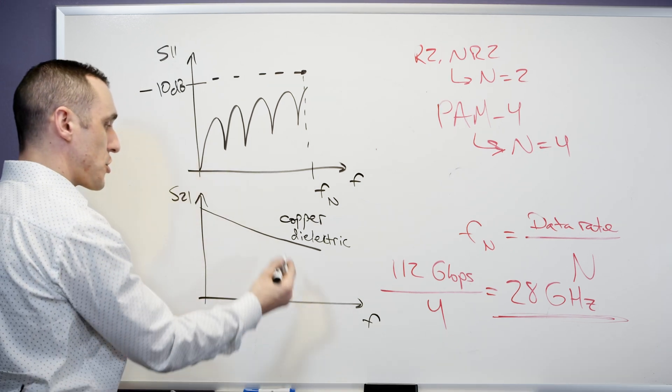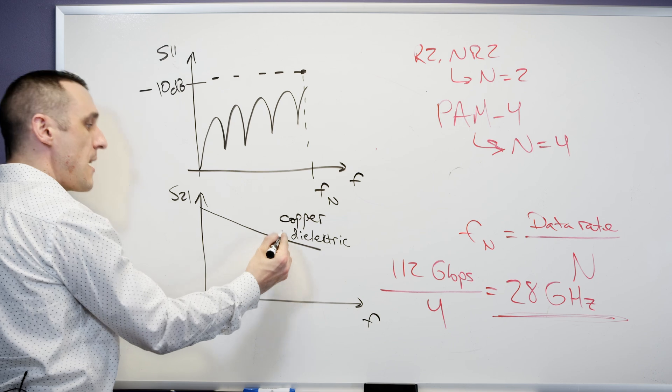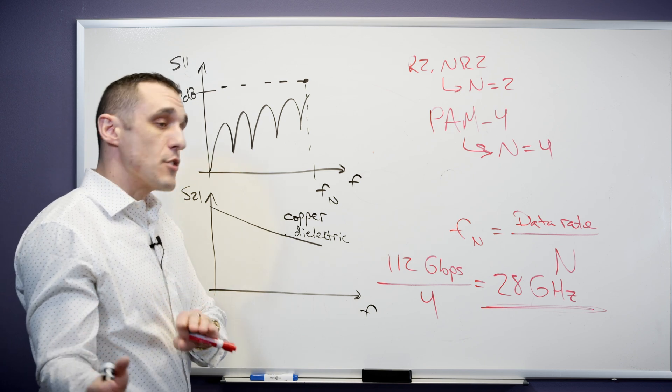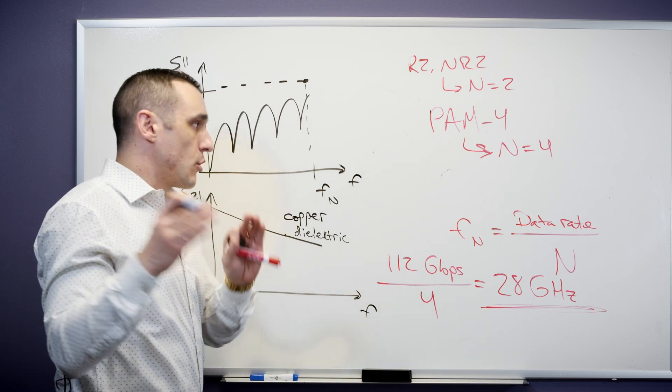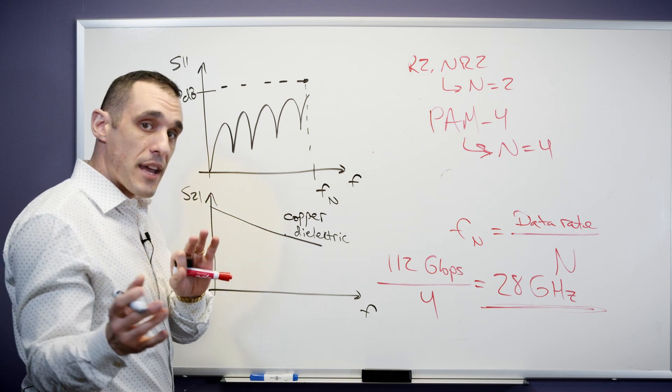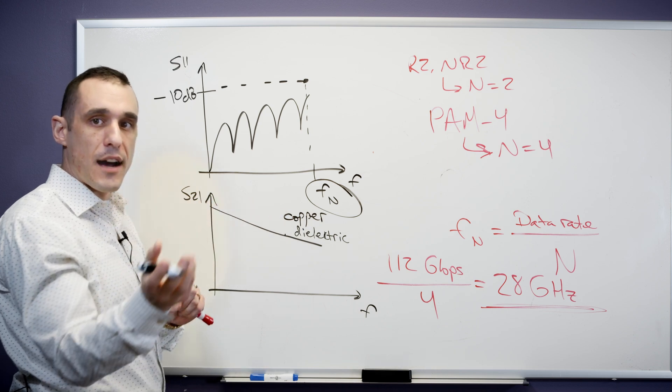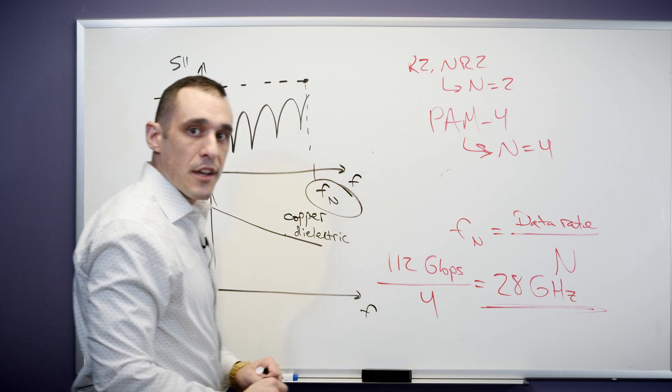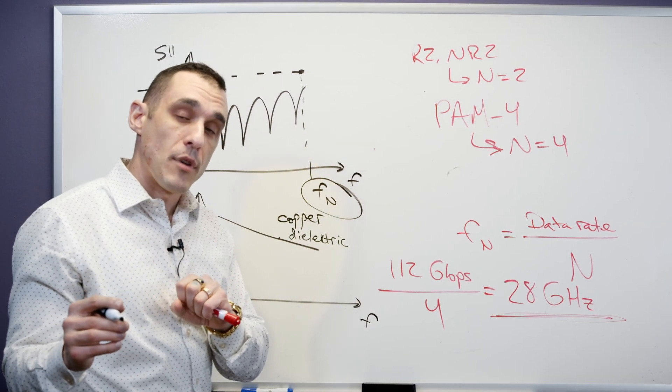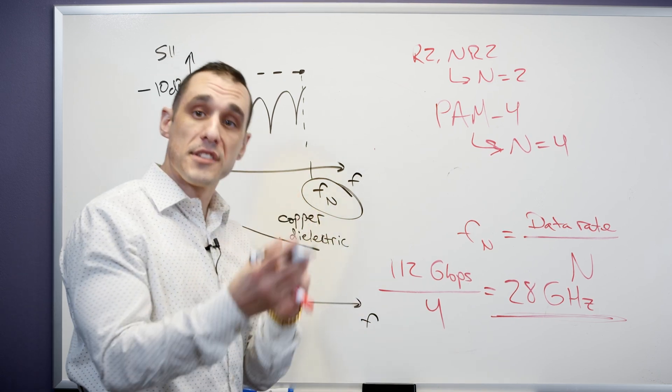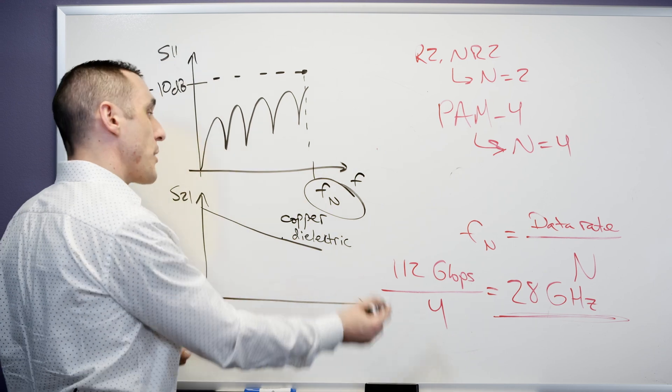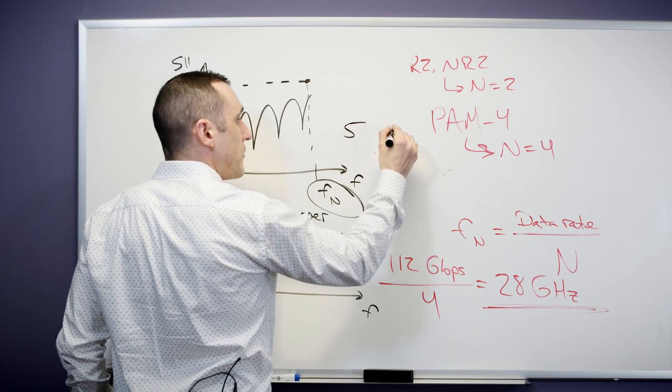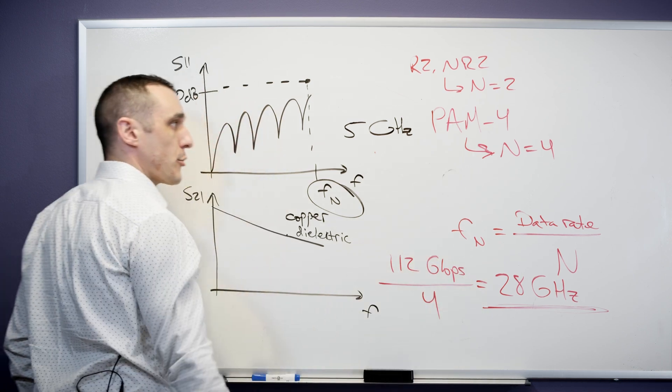You will generally have some insertion loss target, which is going to limit the usable length, and that can be determined from this S21 curve. In terms of the bandwidth that we need in a channel in order to transmit a given data rate, you look at the Nyquist frequency. That's going to define the amount of bandwidth that this channel needs to support in order to transmit this given data rate. Go back to your 10 gigabit per second data stream. What is the signaling format that's being used? If you know the signaling format and you know the data rate, you can then figure out what is the Nyquist frequency for that channel.